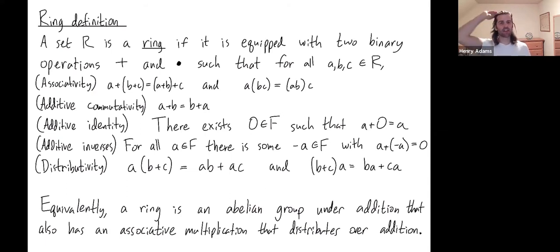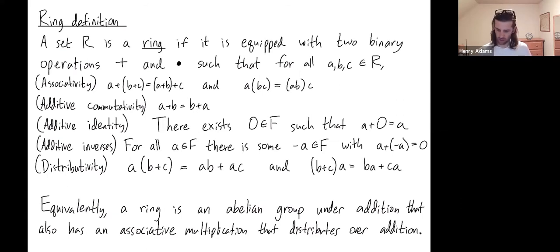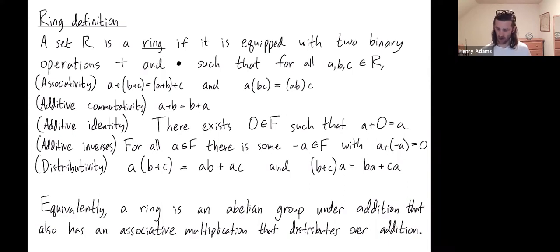Remember that a set R is a ring if it is equipped with addition and multiplication, and we need to be associative under both of those operations. We need to be commutative under addition but not necessarily under multiplication. For example, matrices form a ring but matrix multiplication isn't commutative. You need to have an additive identity, zero, such that if you add zero to anything you don't change it.